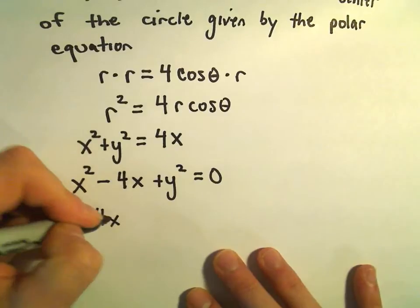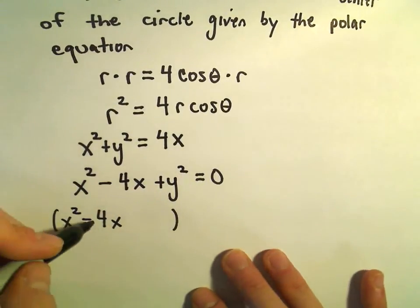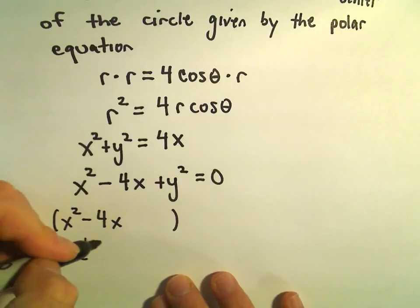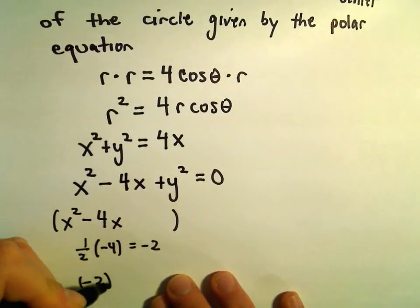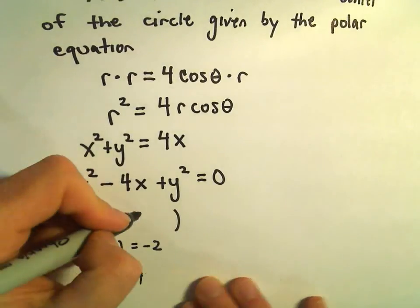So let's see, I think we've completed the square a few times at this point. We take one half of the negative 4, which is negative 2. And then we take negative 2 and square it, and that gives us positive 4.